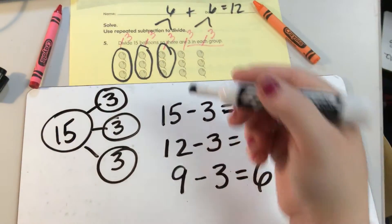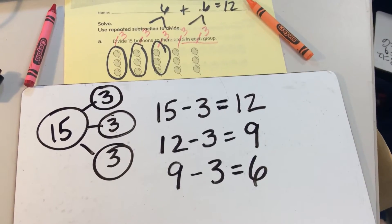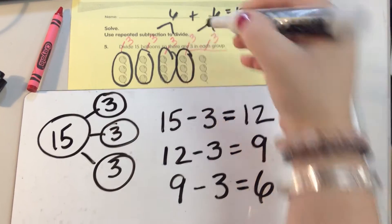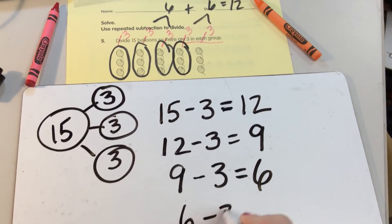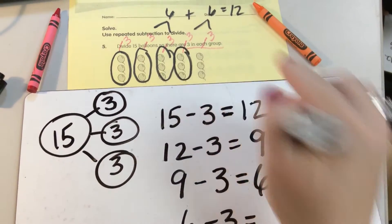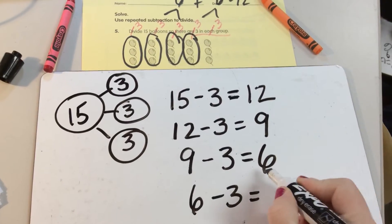So I have 6. Can I make another group? Yes. Well, let's do that. So, we have 6, and I took away 3. And now how many are left? 3. 3 are left.